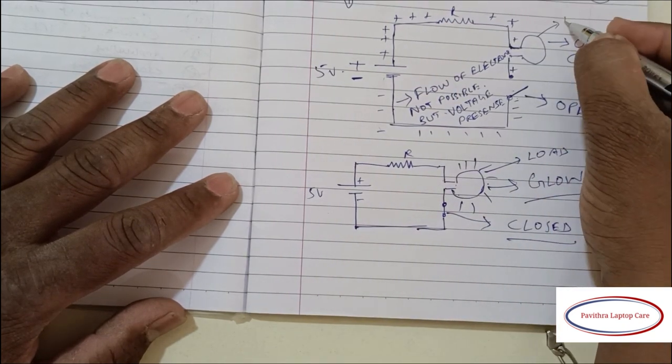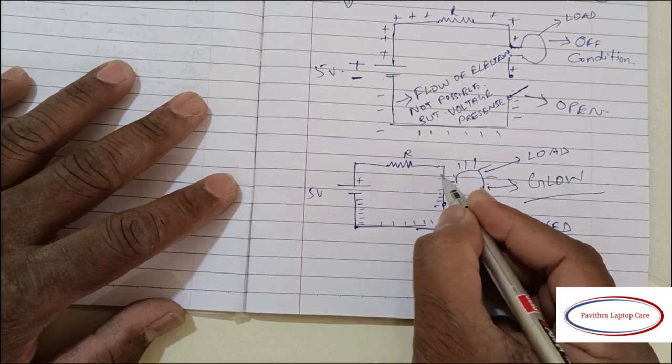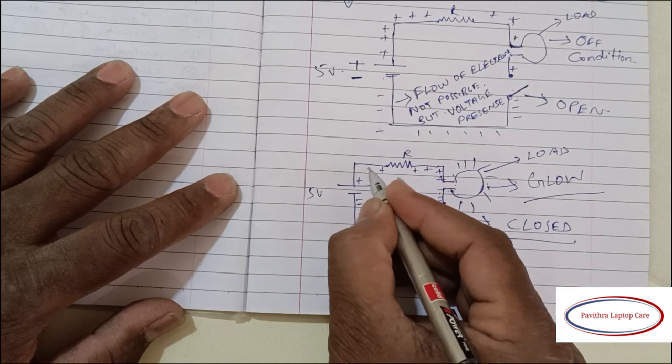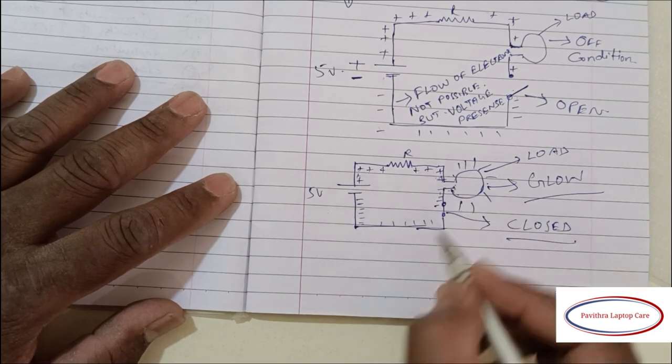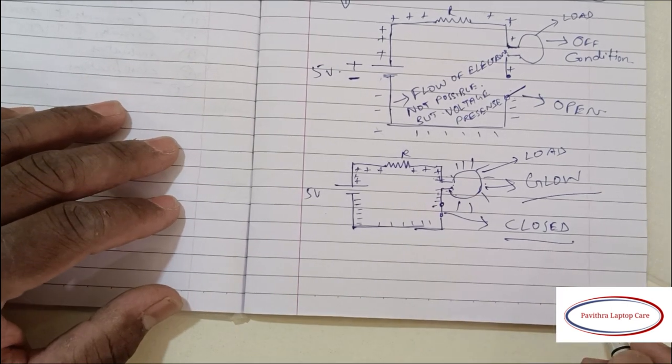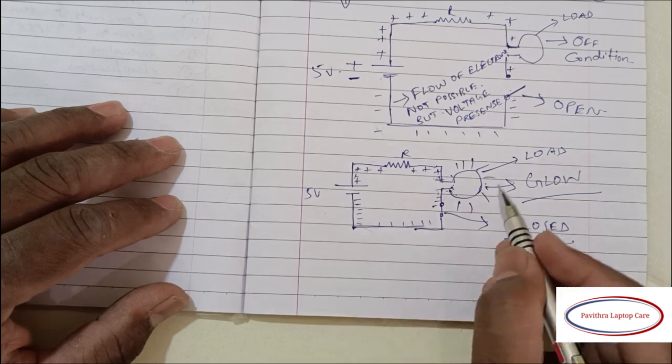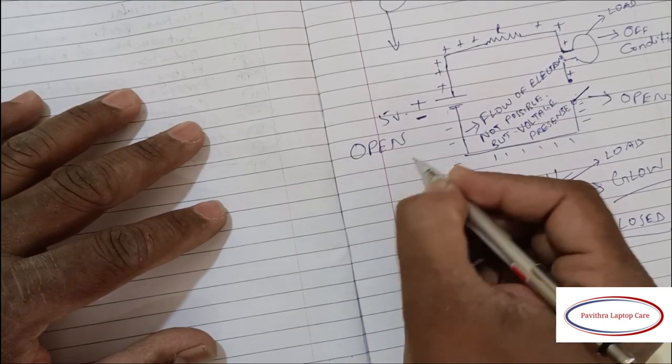Now we will get current and voltage both. See, now the flow of electrons from negative terminal to the positive terminal. The bulb will glow because it's acting as a load. In any circuit, load is a must in a closed circuit.